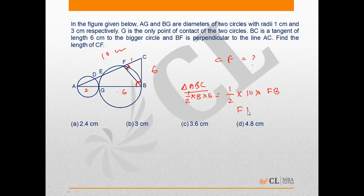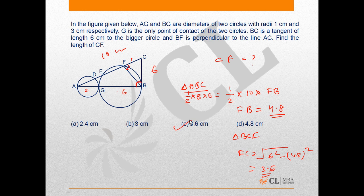Now using Pythagoras theorem in triangle BCF, we get FC as √(6² - 4.8²), and this equals 3.6. Therefore, option C is the correct answer, 3.6 cm.